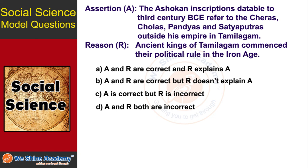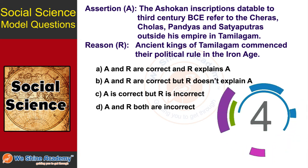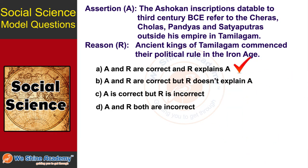The next question: find out whether the assertion and reason are correct or incorrect. Assertion: the Ashokan inscriptions dated to the 3rd century BCE referred to the Cheras, Cholas, Pandyas, and Satiyaputra outside his empire in Tamilakam. Reason: ancient kings of Tamilakam commenced their political rule in the Iron Age. The answer is Option A — both A and R are correct and R explains A.